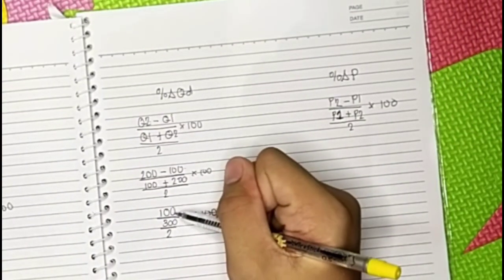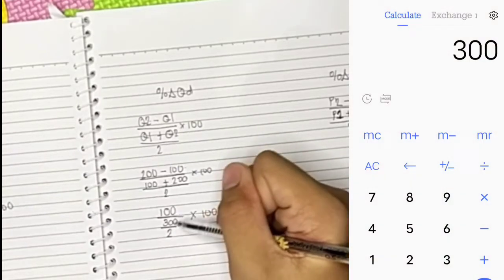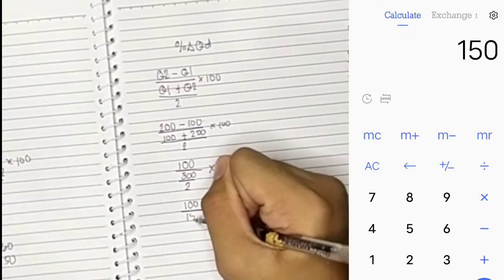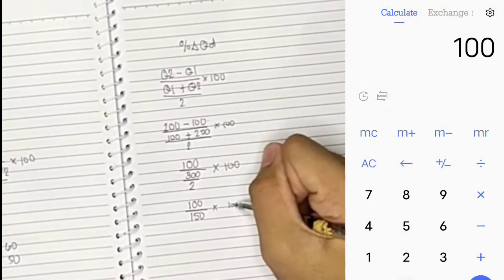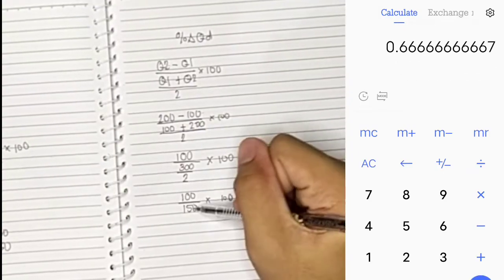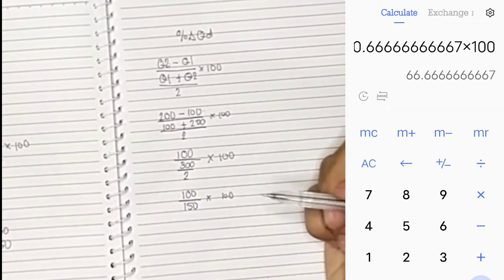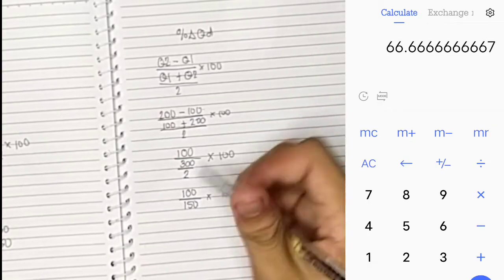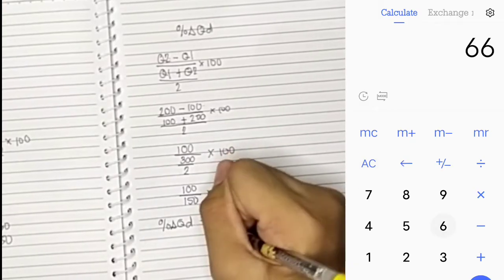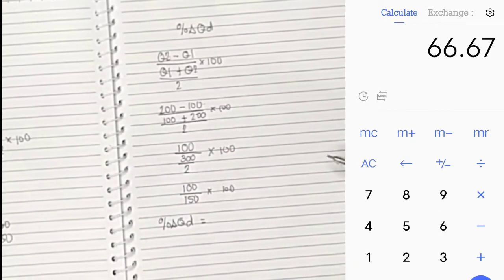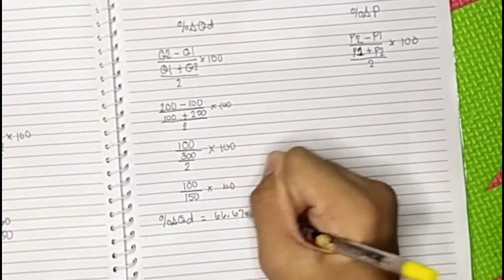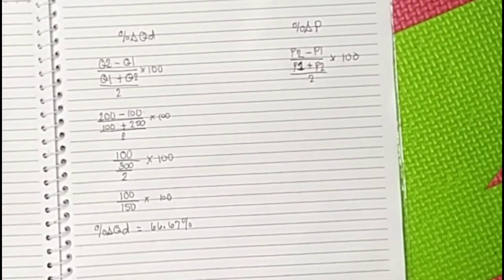Next, divide 300 by 2, which equals 150. So we have 100 over 150, times 100. You have to round it off, so the answer is 66.67%.